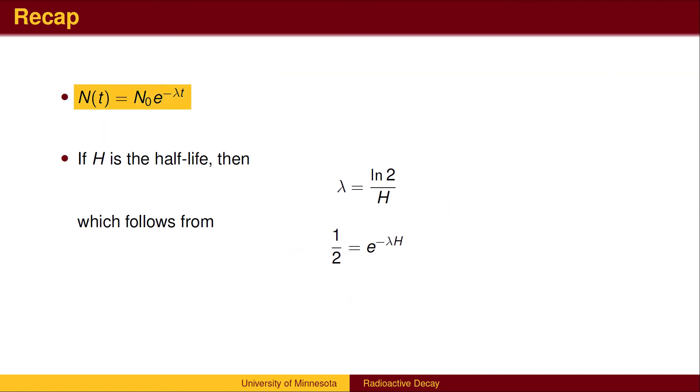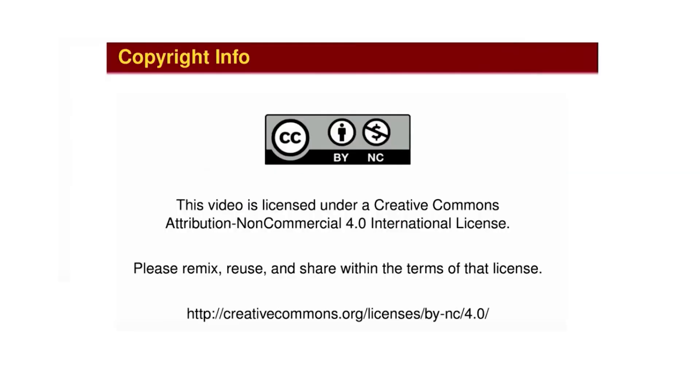To recap, we use the standard exponential growth model, except that the material is decaying, so the exponent is negative. Lambda is the decay rate, t is time, N(t) is the amount present at time t, and N sub 0 is the initial amount. Lambda is related to half-life by the formula lambda equals the log of 2 divided by the half-life, which follows from the definition of half-life.